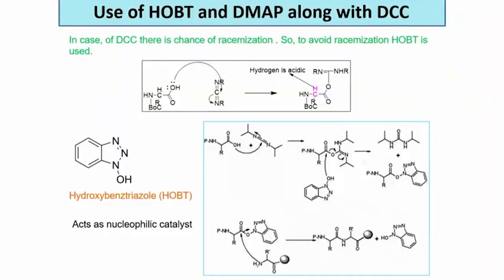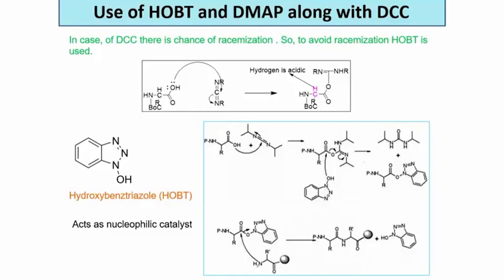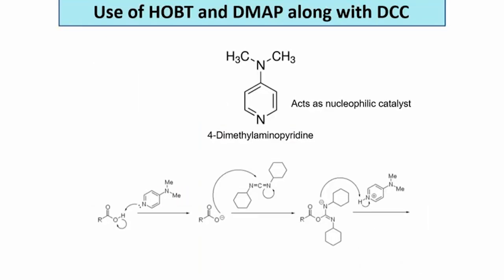There are other groups - sometimes DCC also fails as a coupling reagent. There are some new protecting groups, and sometimes a small amount of DMAP also helps, because the reaction is between a carboxylic acid and the carbodiimide. But if you can make a carboxylate, that will be a better nucleophile. So a catalytic amount of DMAP speeds up the reaction by forming the carboxylate.